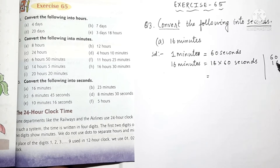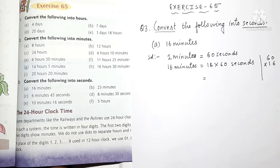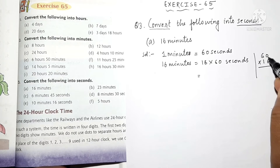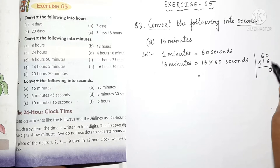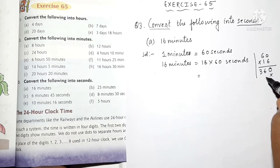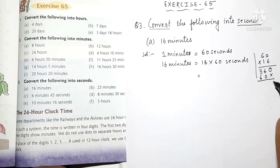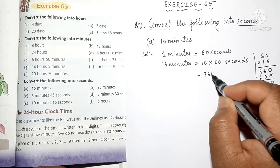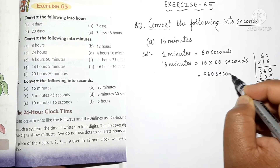60 multiplied by 16: 6 into 0 is 0, 6 multiplied by 6 is 36, 1 into 0 is 0, 1 into 6 is 6. So your answer is 960 seconds.